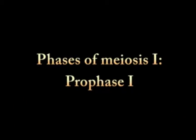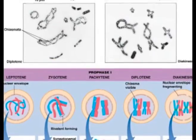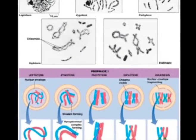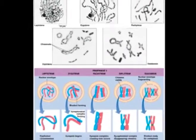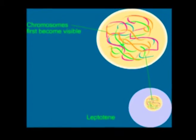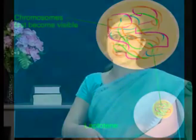Prophase 1: Most of the significant processes of meiosis occur during prophase 1, and it is divided into five phases. Prophase 1 begins at the leptotene stage, where chromosomes are attached at both ends to the nuclear envelope via a specialized structure called an attachment plaque.